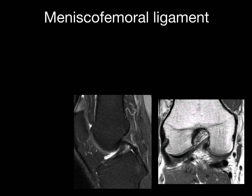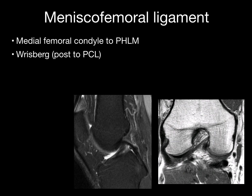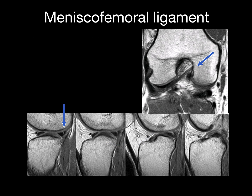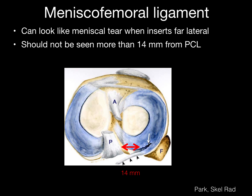One source of confusion is the meniscofemoral ligament, which extends from the medial femoral condyle to the posterior horn of the lateral meniscus. The ligament of Riesberg is posterior to the posterior cruciate ligament; the ligament of Humphrey is anterior to the posterior cruciate ligament. The vertical signal abnormality due to the meniscofemoral ligament can really look like a tear — the trick is to follow it along. You should not see the vertical signal more than 14 millimeters from the posterior cruciate ligament.